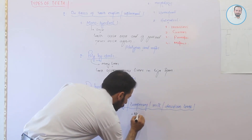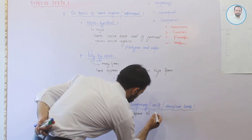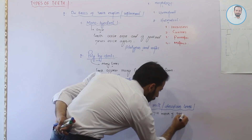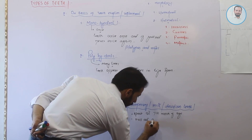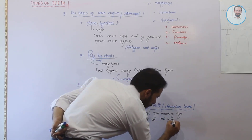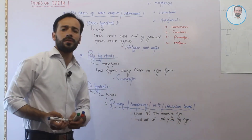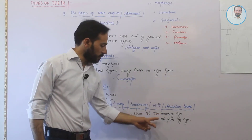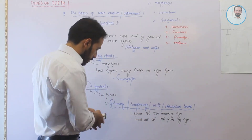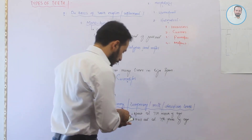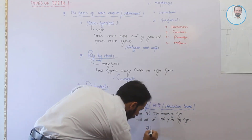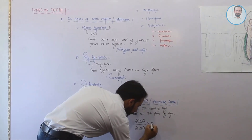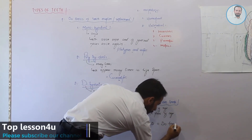These primary teeth appear at the seventh month of age and fall out at the seventh year of age. Many children follow this average — they appear at the seventh month and fall out around the seventh year.